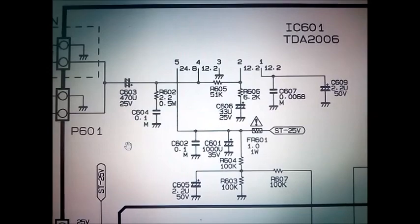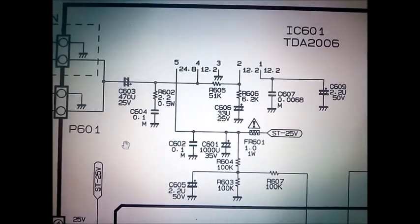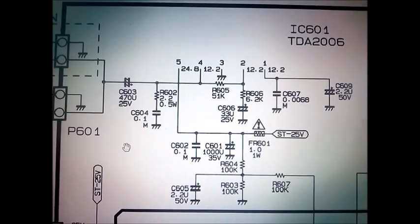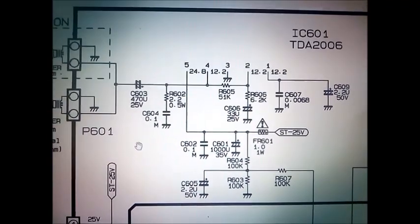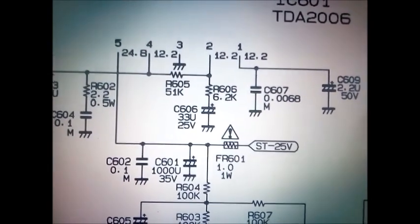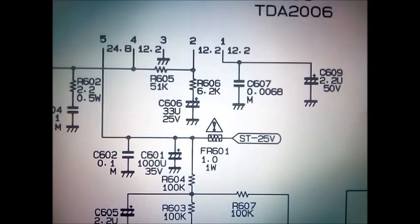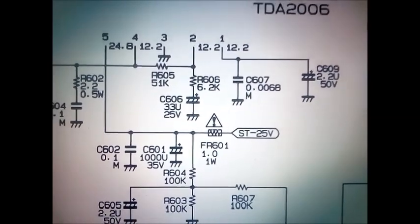Then next check IC601, IC TDA2006. Pin 1 is 12.2V, pin 2 is 12.2V, pin 3 is ground, pin 4 is 12.2V, pin 5 is 24.8V, pin 6 is 12.2V.